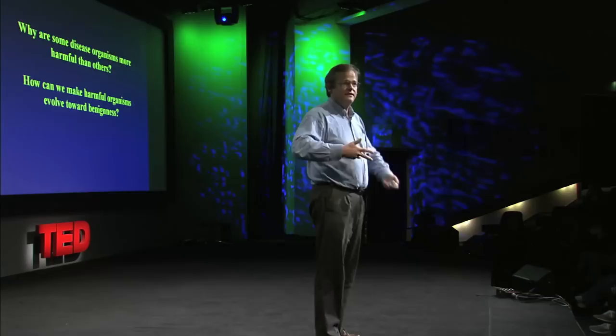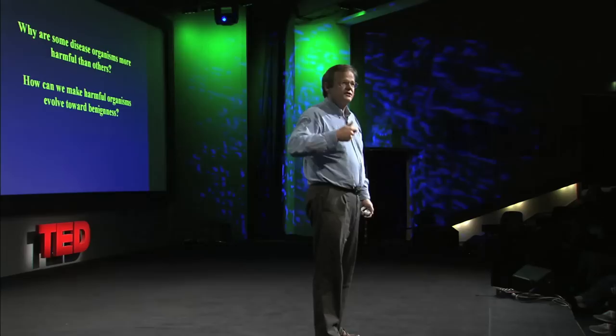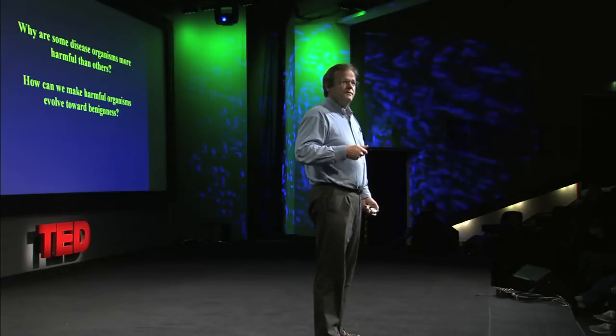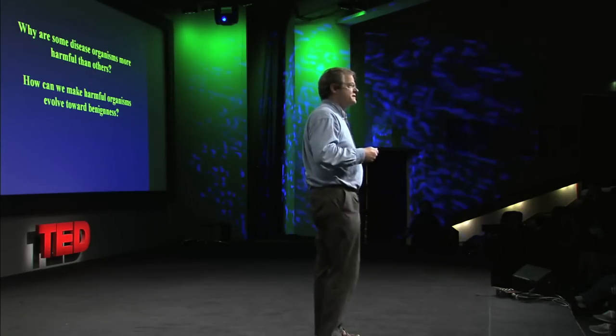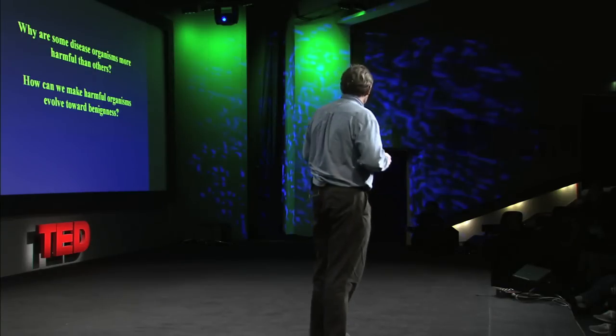Sometimes you get disease organisms that don't rely on host mobility at all for transmission. When you have that, evolutionary theory tells us that natural selection will favor the more exploitative, more predator-like organisms — organisms that are more likely to cause damage. If instead transmission to another host requires host mobility, then we expect the winners of the competition to be the milder organisms.